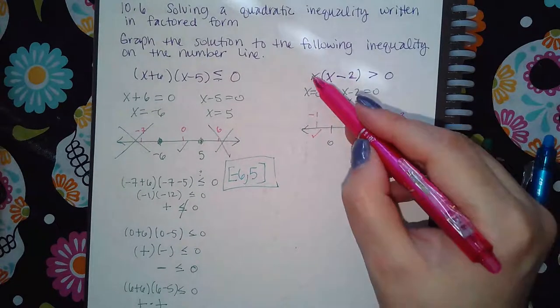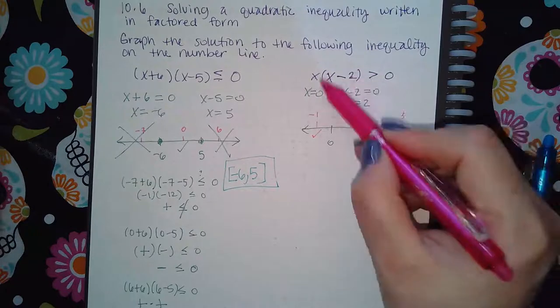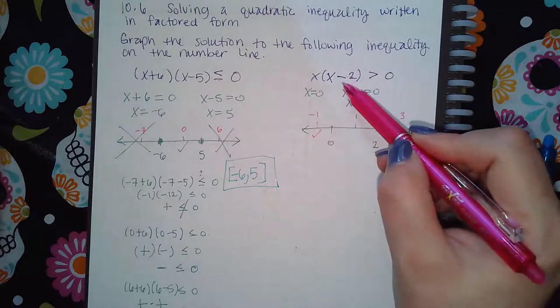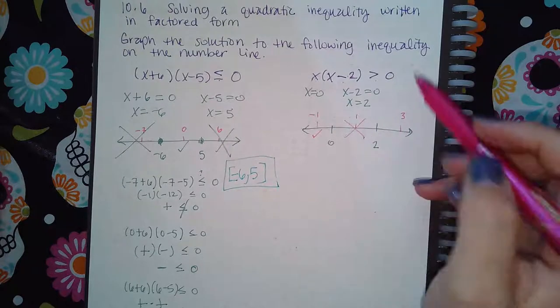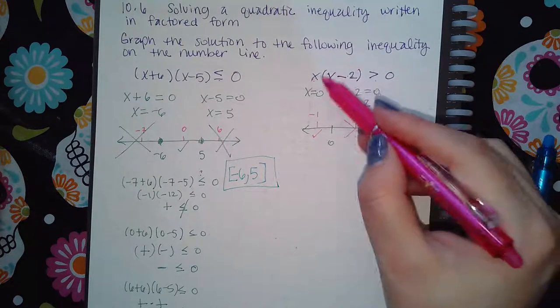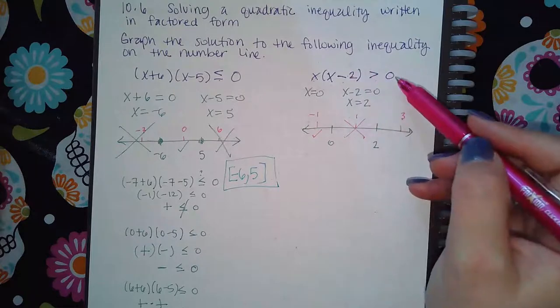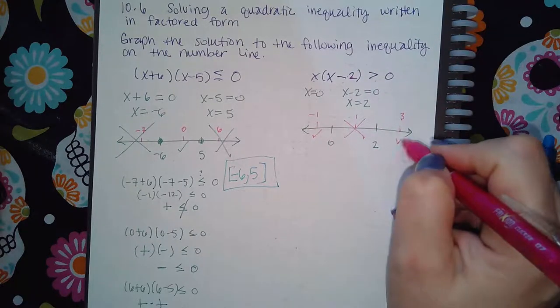If I plug in one, I get one times a negative one, positive times a negative is not greater than zero. So this section does not work. And then when I plug in three, I get three times a positive one, which will be a positive answer. And so this one will check out.